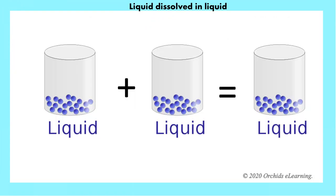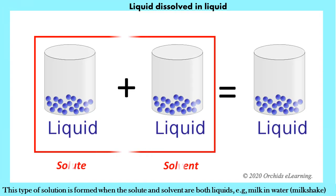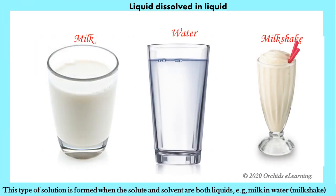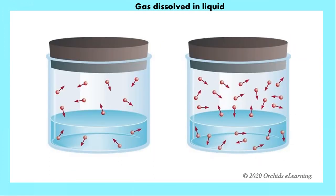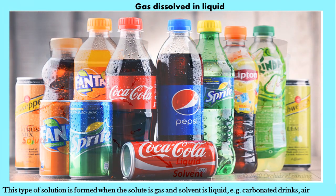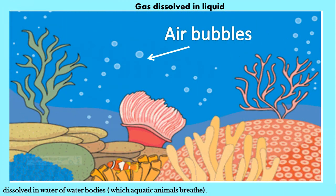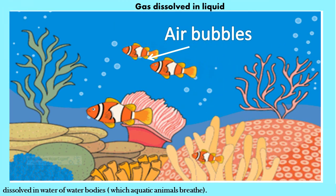Liquid dissolved in liquid: this type of solution is formed when the solute and solvent are both liquids — for example, milk in water. Gas dissolved in liquid: this type of solution is formed when the solute is gas and the solvent is liquid — for example, carbonated drinks, and oxygen dissolved in the water of water bodies, which aquatic animals breathe.